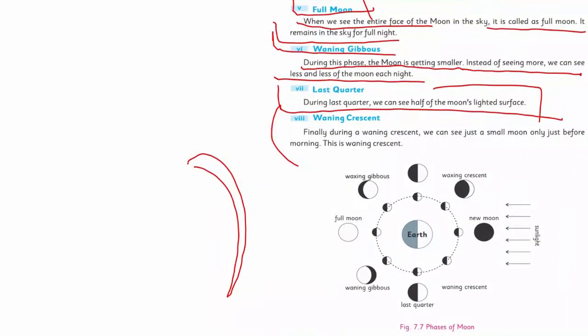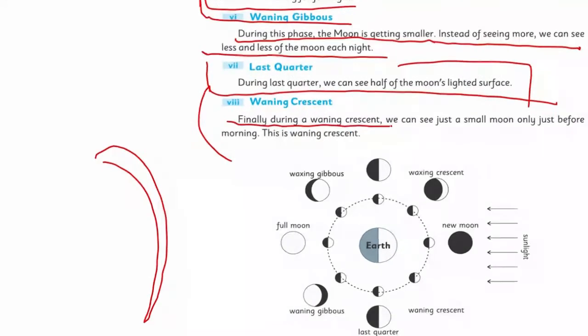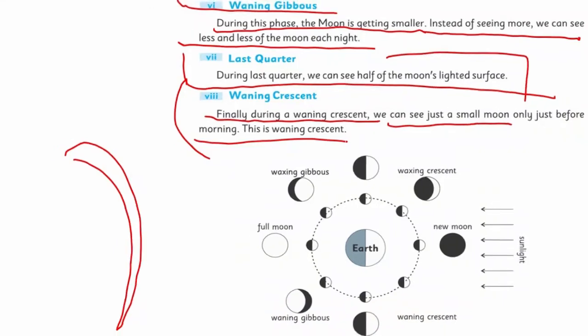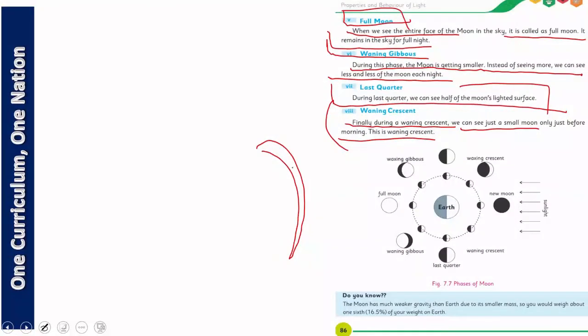And waning crescent. That crescent was rising, waxing. Now what is this? This is waning crescent. Finally, during the waning crescent, we can see just a small moon only just before morning. It appears at the end. When it was coming, it was visible in the evening. And when it is going, in the early morning for a short while, it is visible to us.